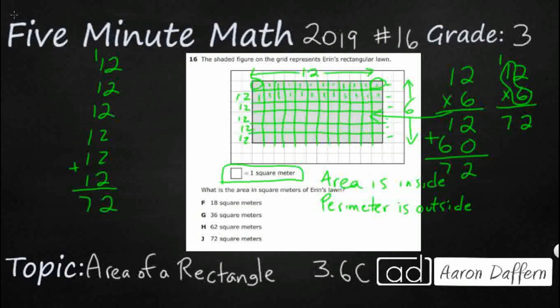So it looks like our answer is going to be this 72 square meters. Now, how do we get some of these other numbers? Well, 12 plus six gets you 18. If you were to double that, you would get 36. And 62 is probably just incorrect, because someone was trying to count one by one by one, and they just miscounted, because that's a lot of counting. So our answer is J.